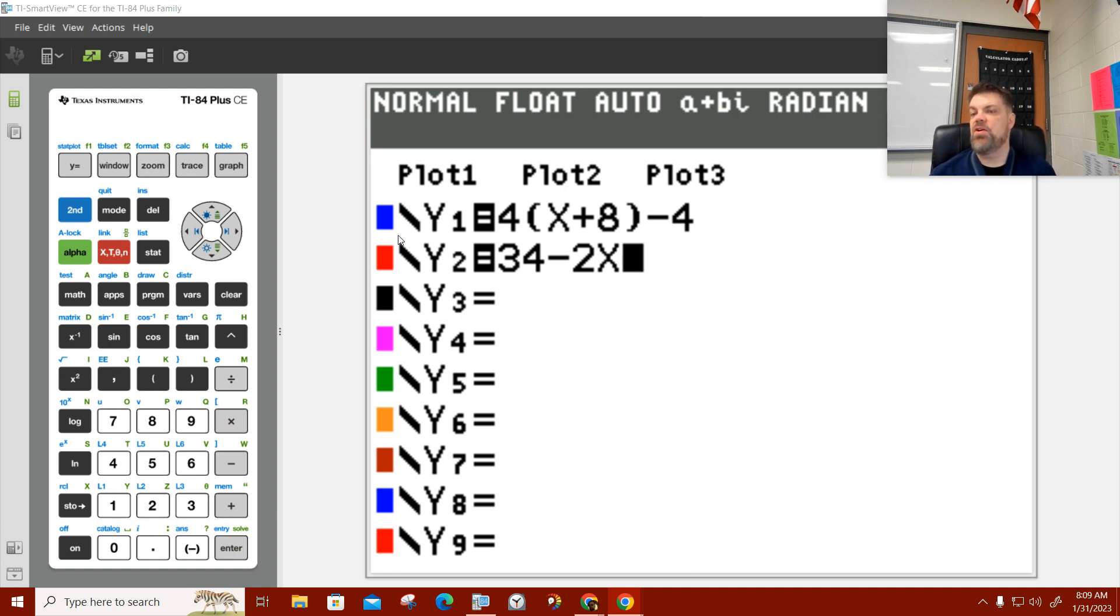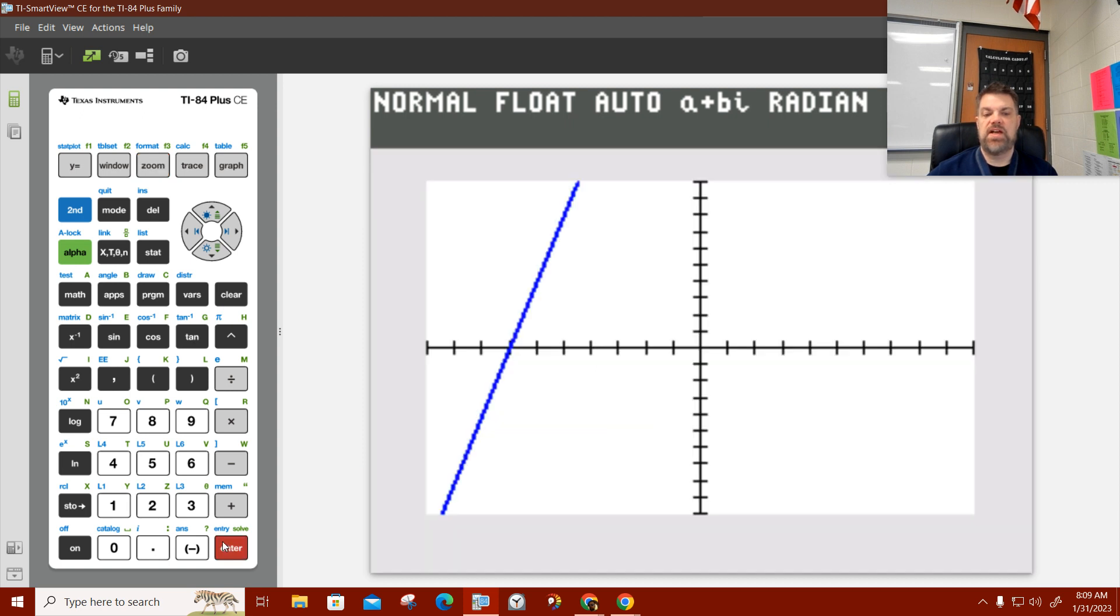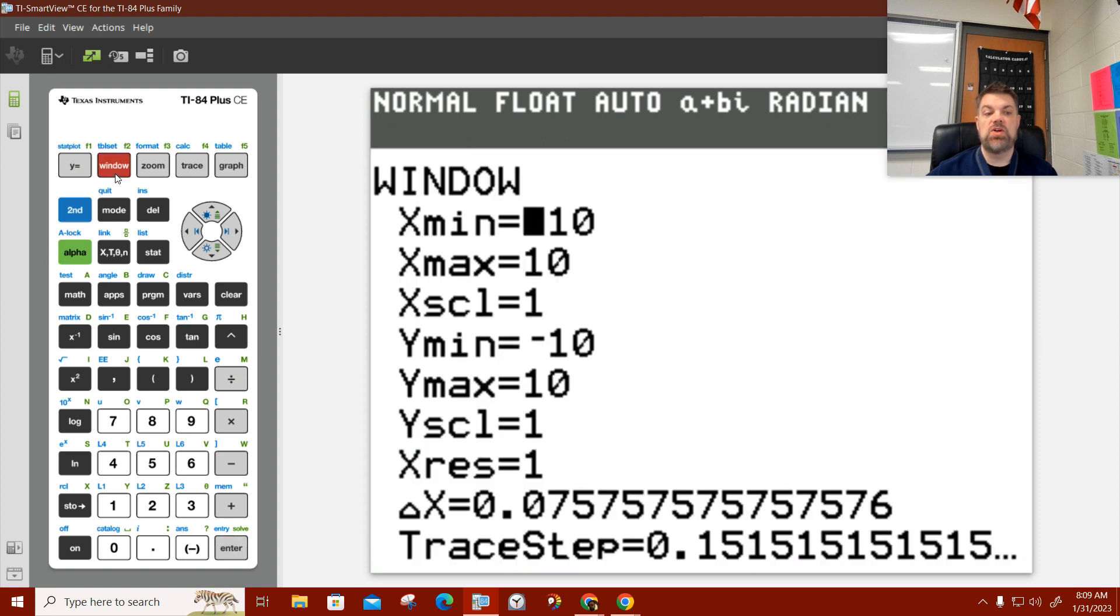Now, I just did the algebra, and I know that x equals 1. So in my window, I'm just going to hit zoom standard, which will include positive 1 for x. Hit enter. Uh-oh. I guess it doesn't. So now I need to zoom out. So it's a big one. So let's put, for my x min, I'm going to put 0.